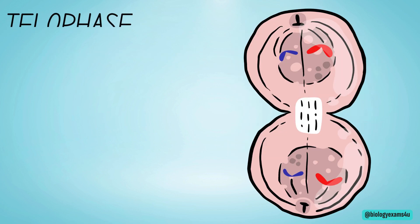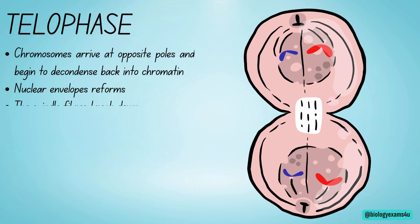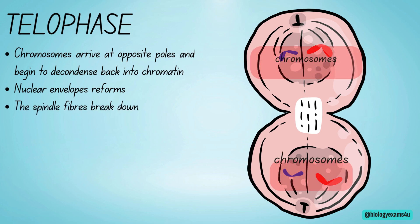The final stage is telophase. Chromosomes arrive at opposite poles and begin to decondense back into chromatin. Nuclear envelopes begin to reform around each set of chromosomes, and the spindle fibers break down.